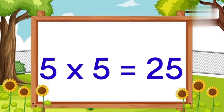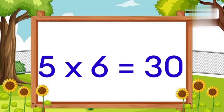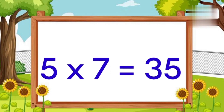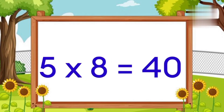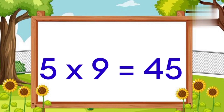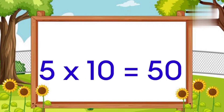5 5's are 25. 5 6's are 30. 5 7's are 35. 5 8's are 40. 5 9's are 45. 5 10's are 50.